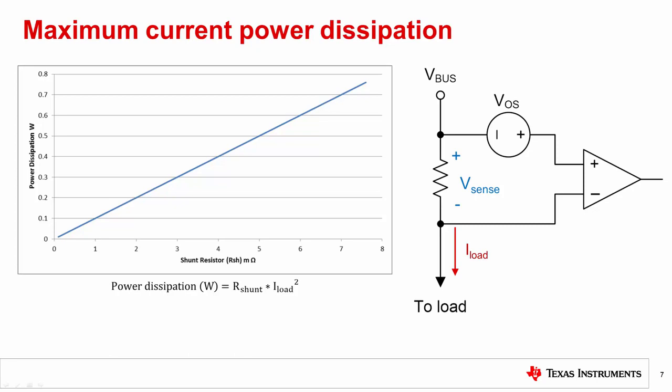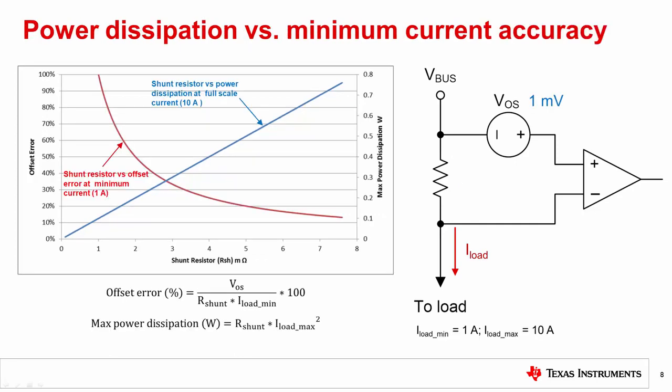However, the power that is dissipated across the shunt resistor also increases, which can cause heat, size, and cost problems in a real application. There is a trade-off between maximizing accuracy at minimum current and minimizing power dissipation at maximum current.